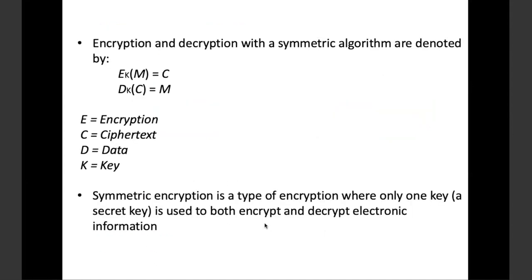When encrypting a message with the key, it becomes cipher text. When decrypting the cipher text with the same key, it becomes the message again. The key is the same throughout — if you want the data from the cipher text, it's going to use the same key all across.